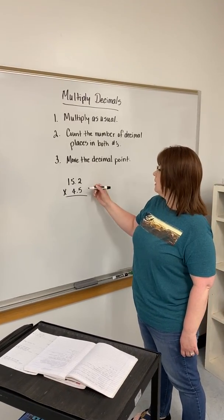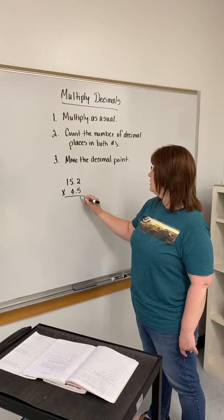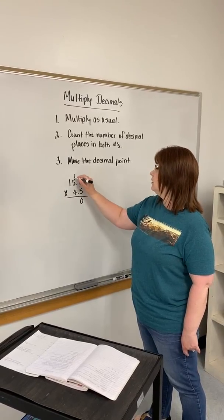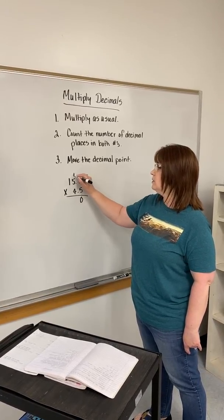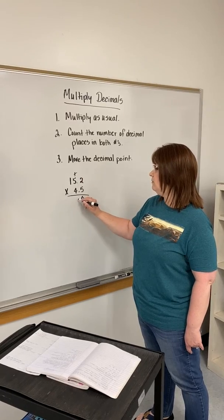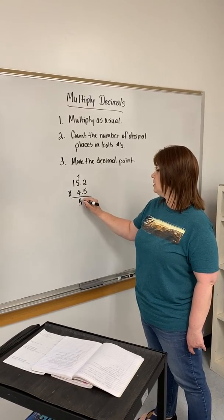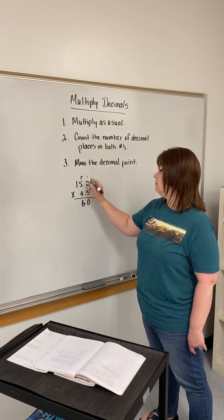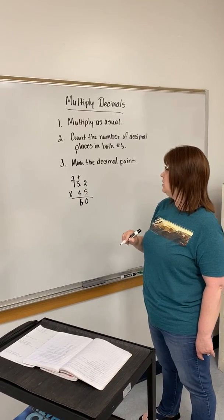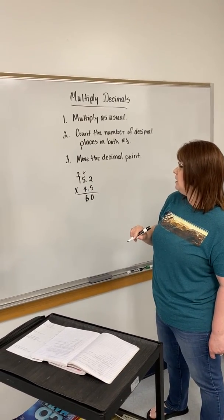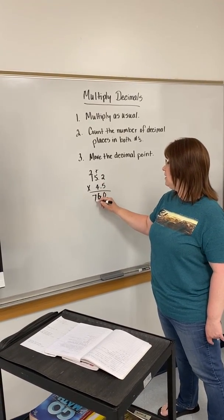So I multiply as usual: 5 times 2 is 10. 5 times 5 is 25, plus the one I carry makes 26. Carry the 2. 5 times 1 is 5, plus 2 is 7.